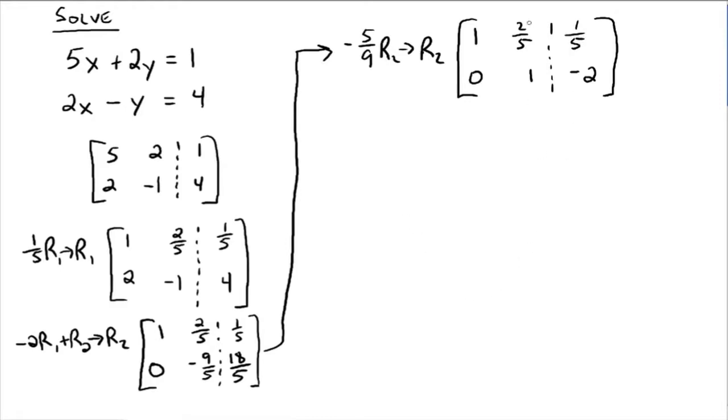All right, so now the only thing left to do is to make this 2 fifths a 0 using that 1. So how do we do that? You multiply 1 by negative 2 fifths. So negative 2 fifths times row 2, add that to row 1, and that gives us a new row 1.